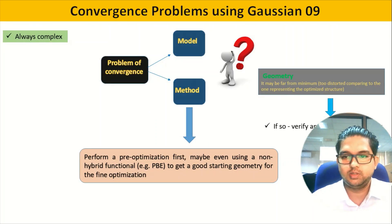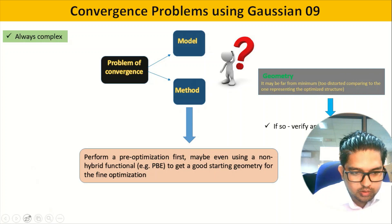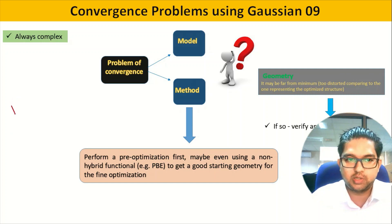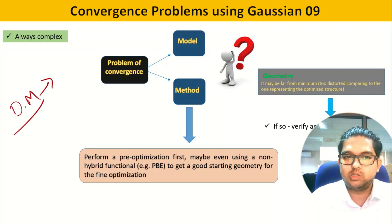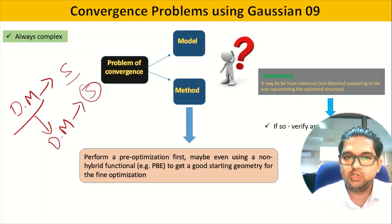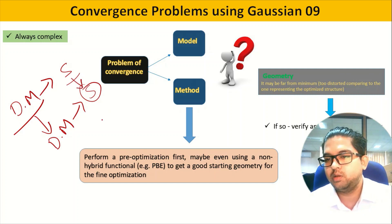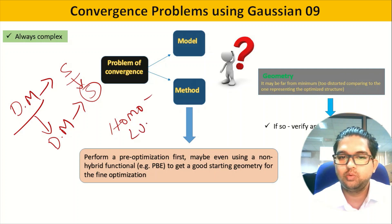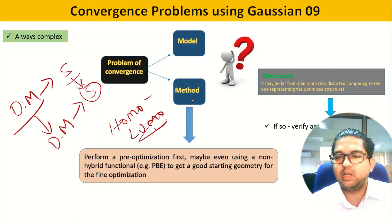Generally, what happens is whenever you have a density matrix in the input, it will have some symmetry. After geometry optimization you again have a density matrix with a symmetry. If the input symmetry and output symmetry are not matching, you will have convergence failure. Also, whenever the HOMO-LUMO gap is very small, in those cases you will also be seeing convergence issues.